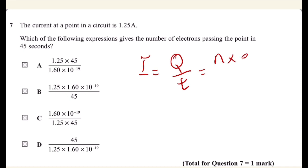I'm asking for the number, so the number equals by cross multiplication, it's I times t over e. So I'm looking for the multiplication of the current and the time divided by the value of the charge.